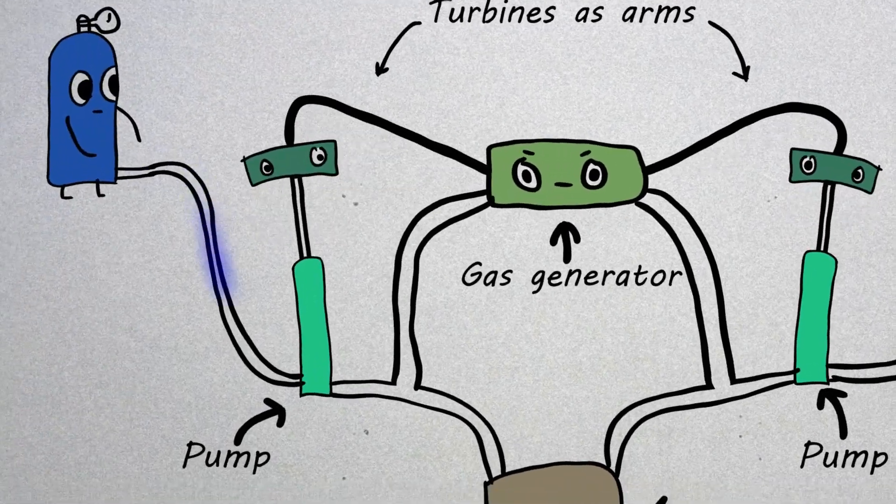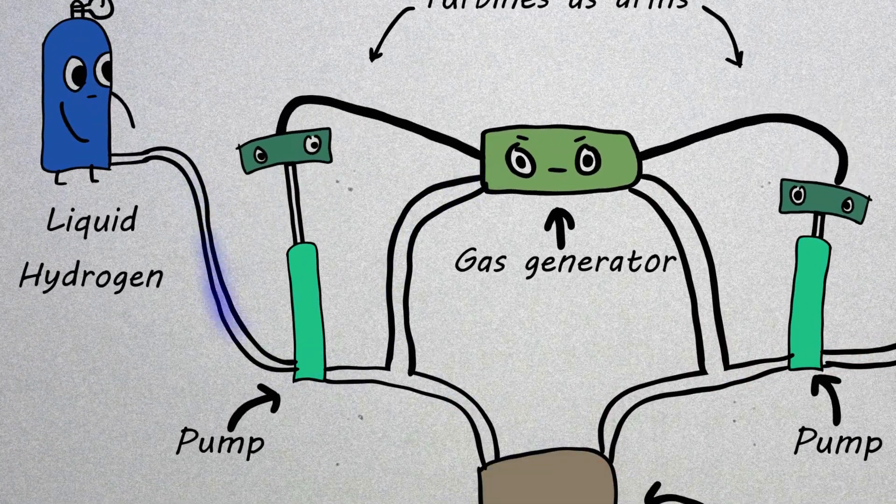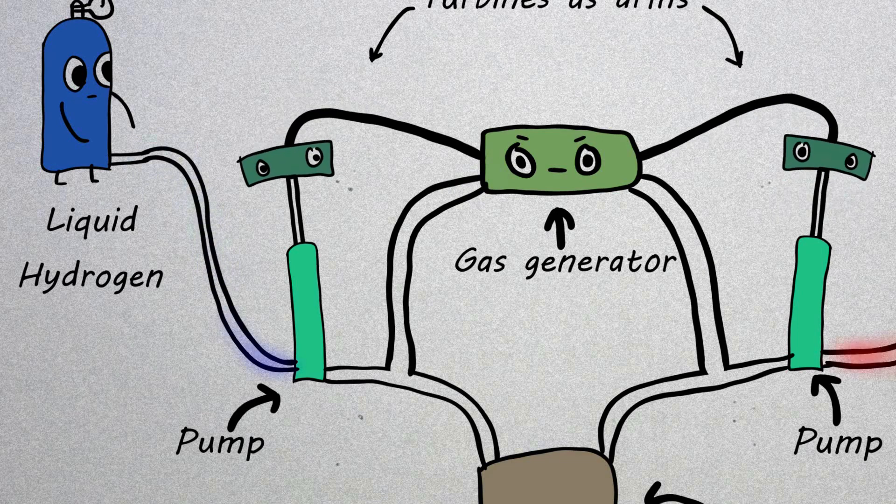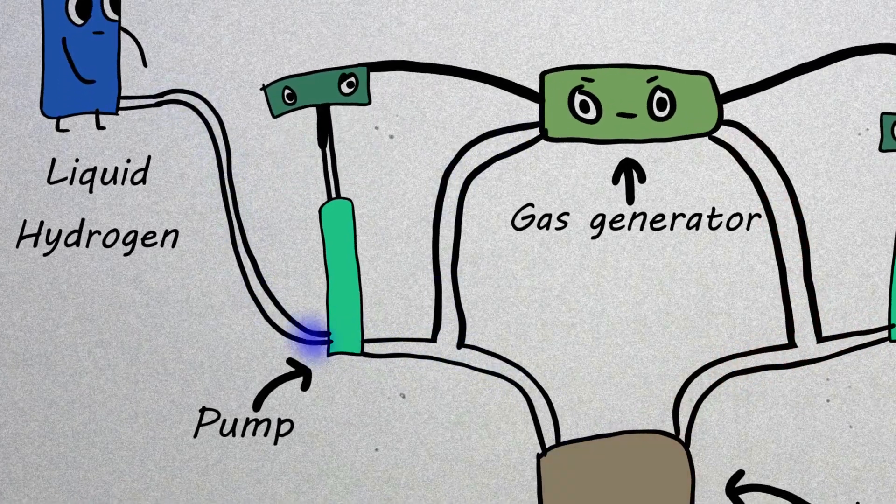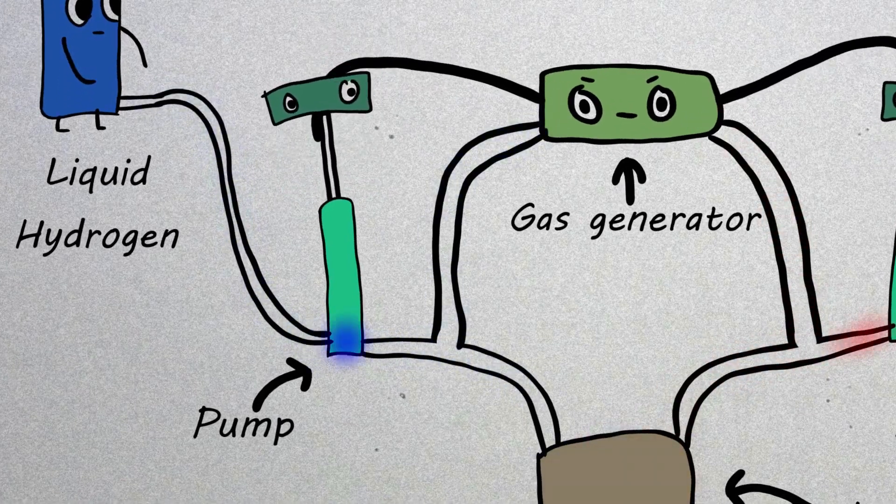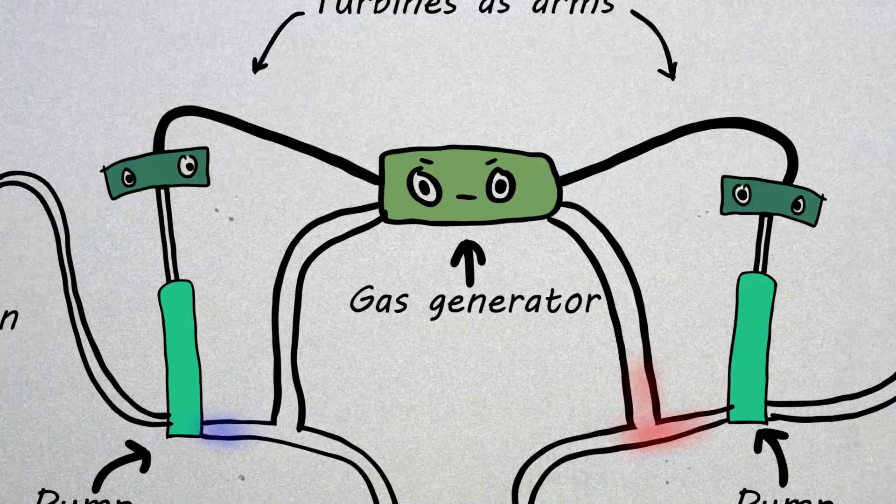So to summarize, the fuel stuff, liquid hydrogen and liquid oxygen, enter the engine and go immediately into the pumps. After exiting the pump, a small amount of each fuel stuff is tapped off to supply the gas generator.